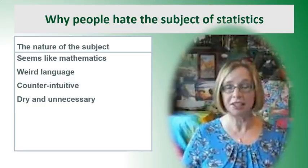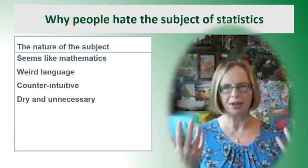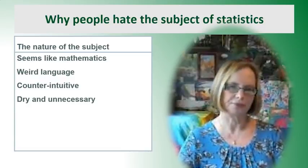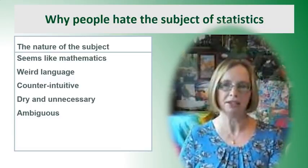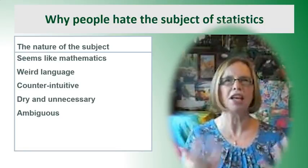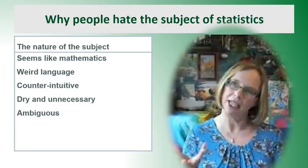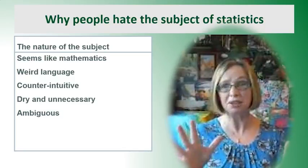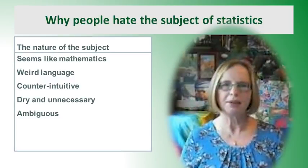Some people think statistics is dry and unnecessary because the examples they're given don't seem to apply to their lives. Statistics can also be quite ambiguous. People who like maths enjoy things being right or wrong, but in statistics it's about probabilities — 'it depends on this,' 'if you take one sample this happens but a different sample something else might happen.' So it's a bit ambiguous.